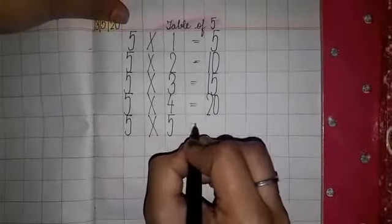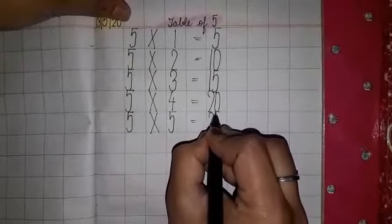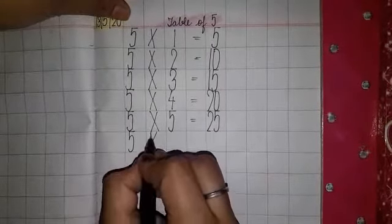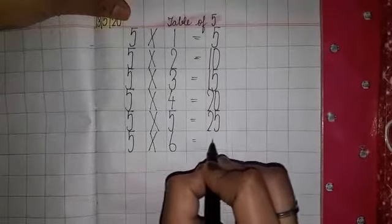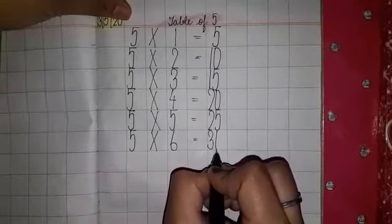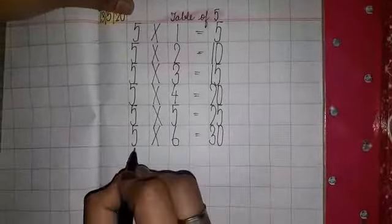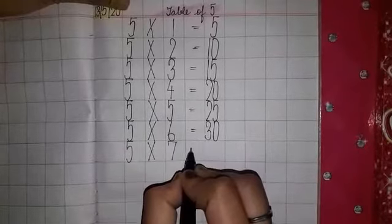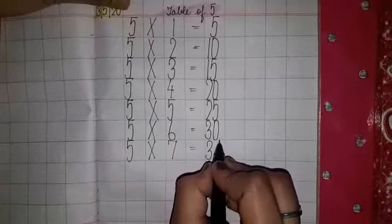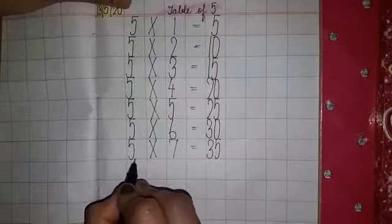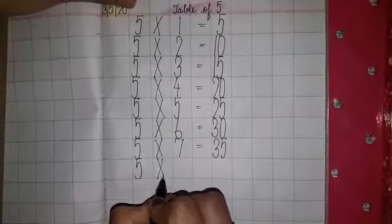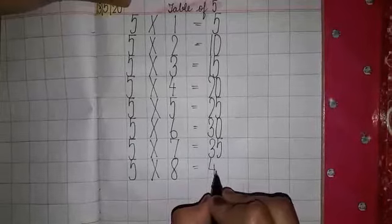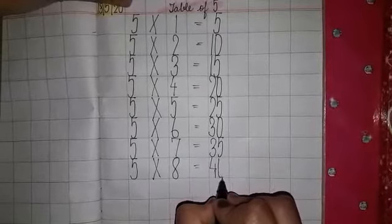Five five jump twenty five. Five six jump thirty. Five seven jump thirty five. Five eight jump forty.